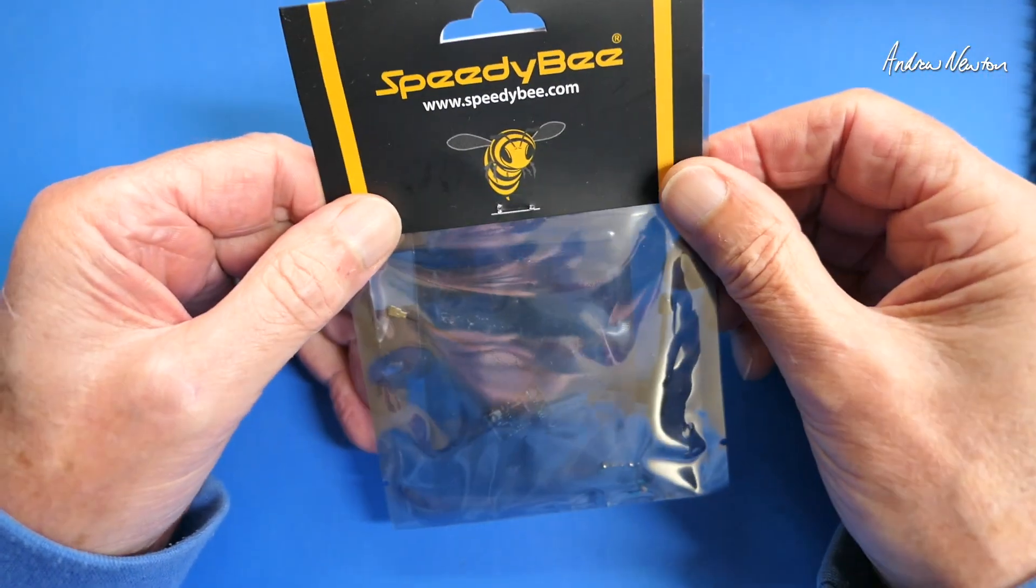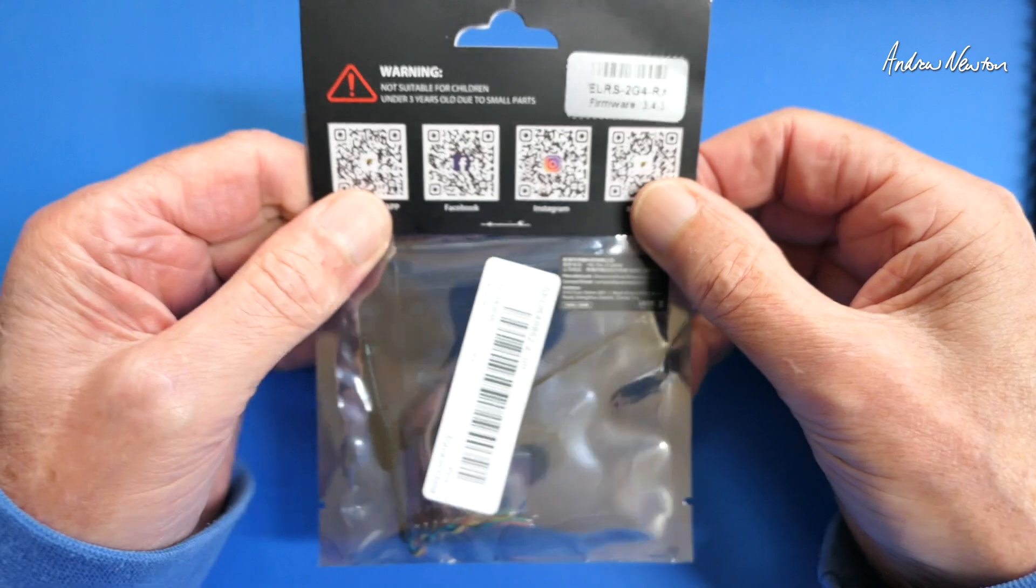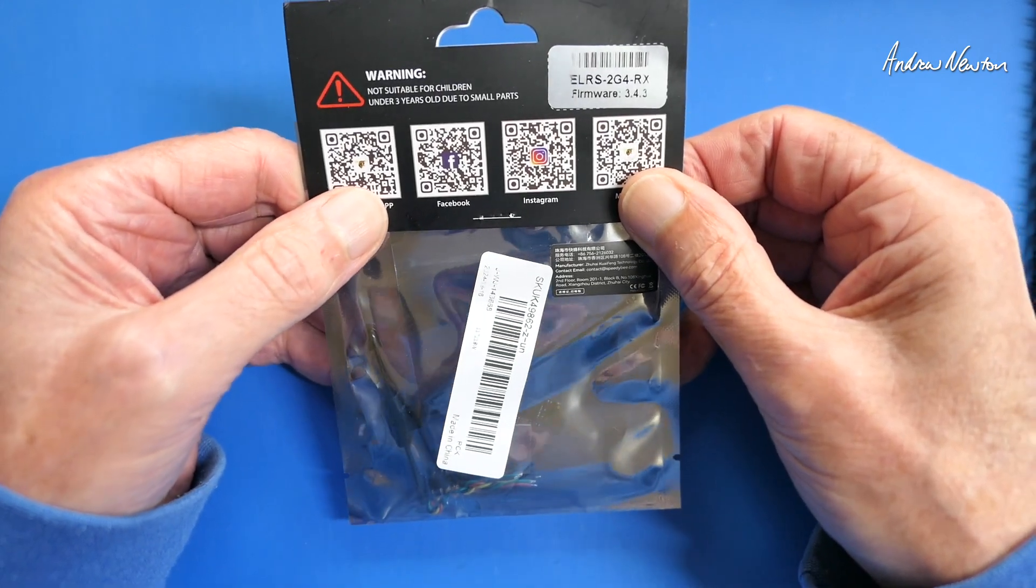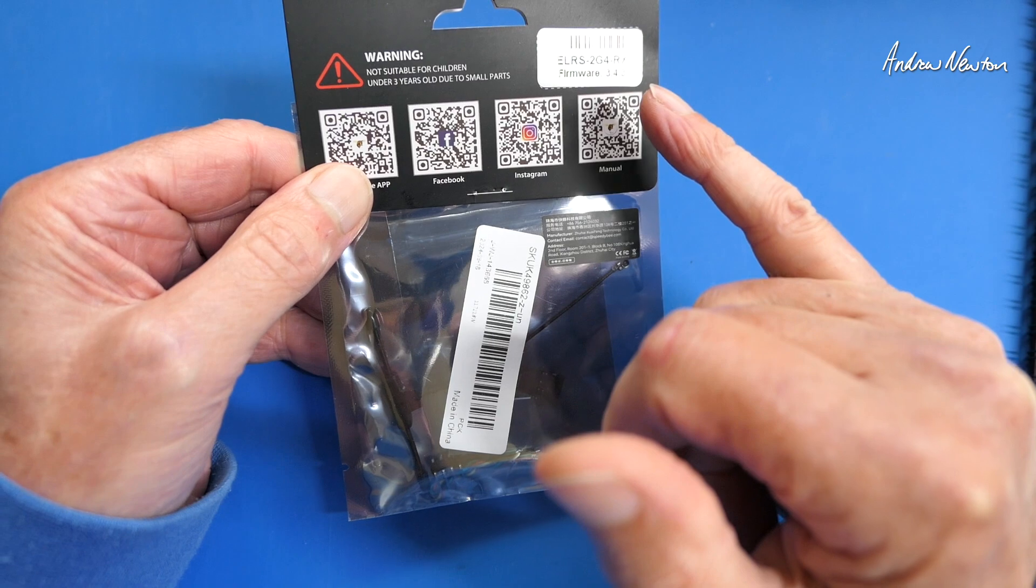Greetings folks, in this video I'm going to be having a look at the Speedybee Nano ELRS receiver. It comes in 2.4GHz and 915MHz. This is the 2.4GHz version.